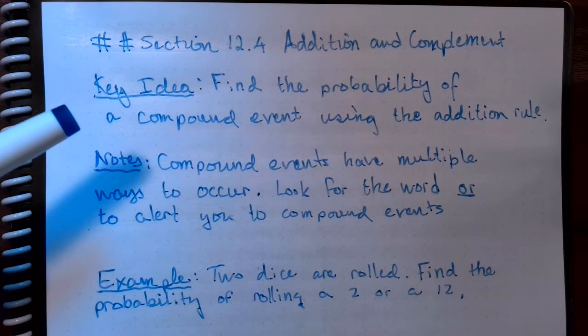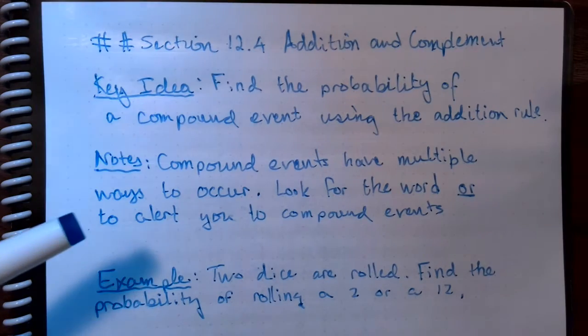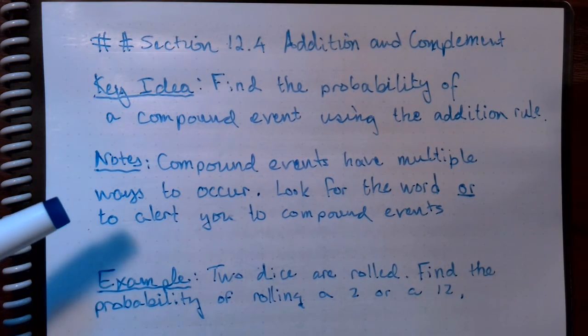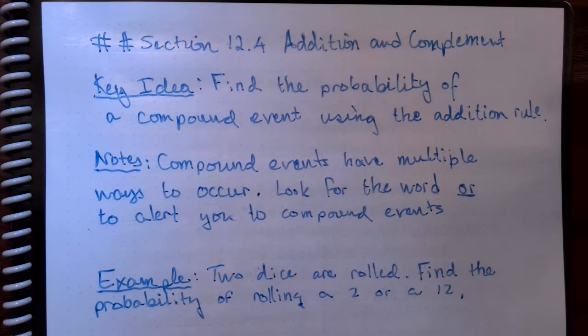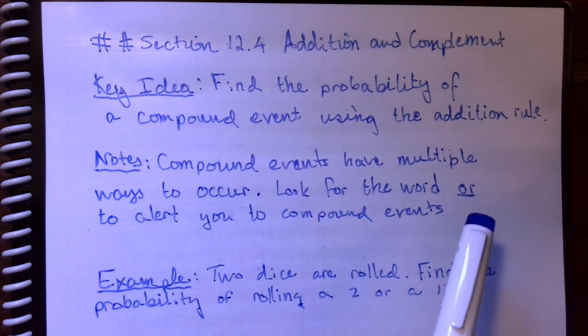The key idea is finding the probability of a compound event using the addition rule. Compound events have multiple ways to occur. Basically your key for alerting yourself that you're dealing with a compound event is, do you see the word OR?